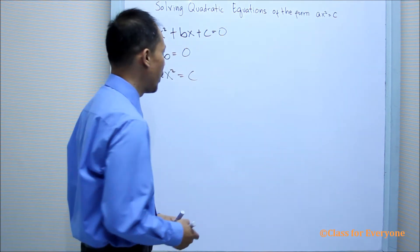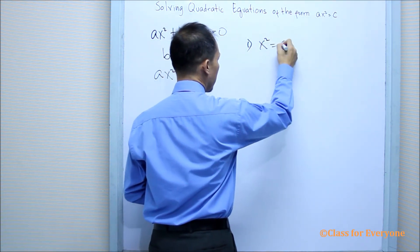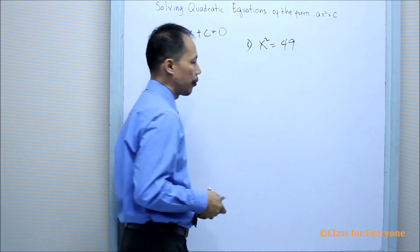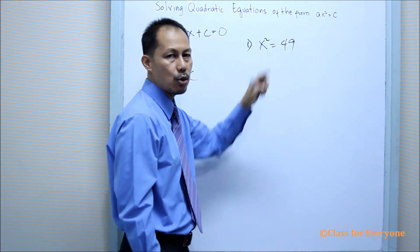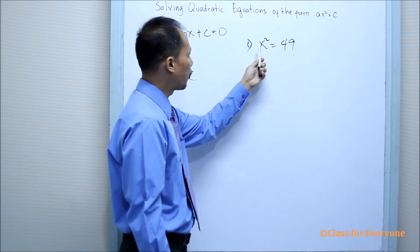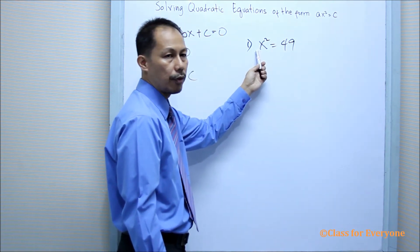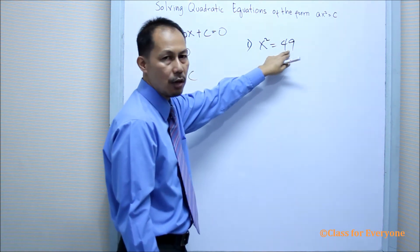Let's have an example. Suppose we have x² = 49. You'll notice that the quadratic term is already isolated, and the numerical coefficient of the quadratic term is just 1, so we do not need to divide by 1 anymore because it will still be 49.